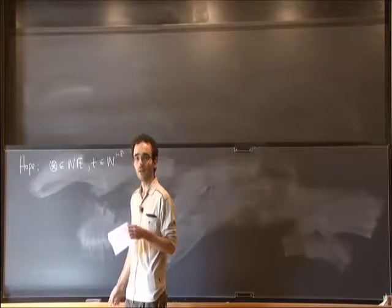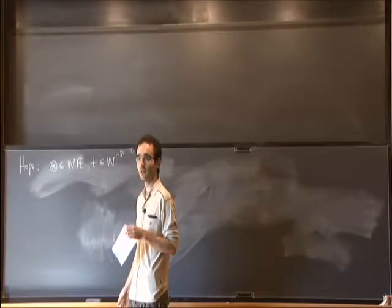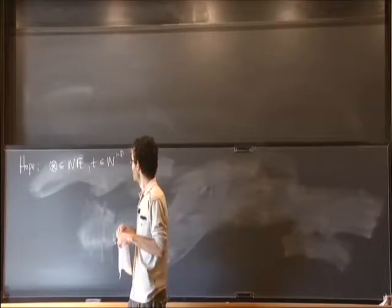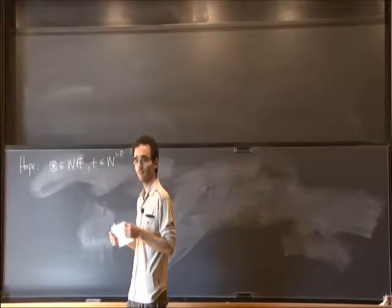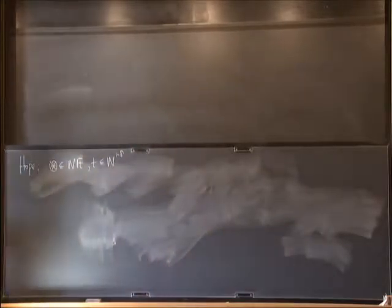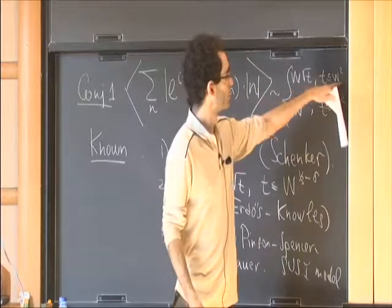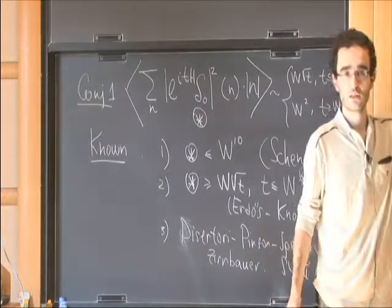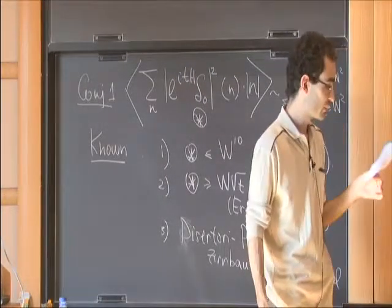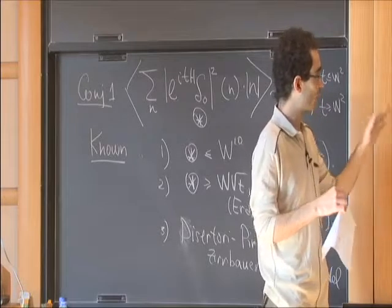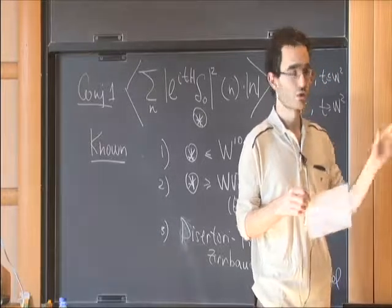So let me discuss what we can currently state. It's expected up to W squared. If one could show W to the 2 minus delta it would be much more impressive. For now I will present a more modest result. To formulate it, I will first state the conjecture in slightly different terms using the Green function.